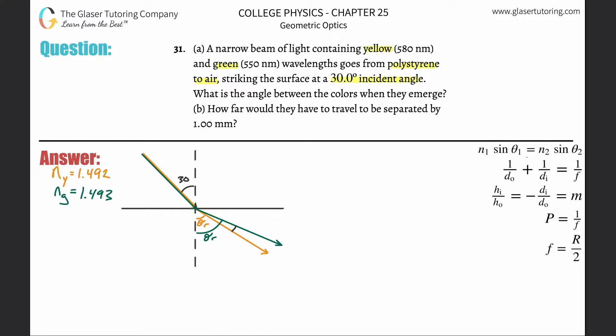All right, so let's do that. Let's do it for green first. We're going to use Snell's law, so it's the index of refraction for the incident ray multiplied by the sine of the incident angle equals the index of refraction for the refracted ray multiplied by the sine of the angle of refraction.